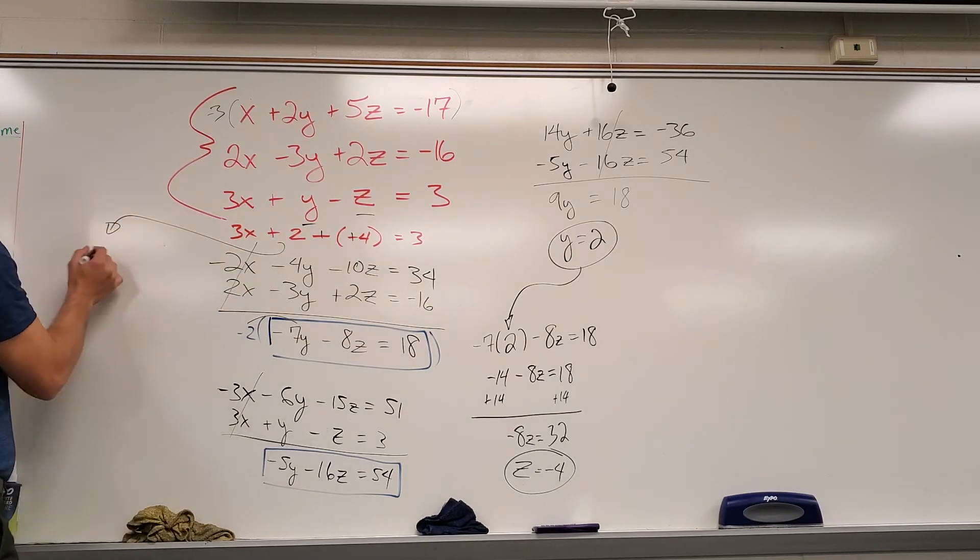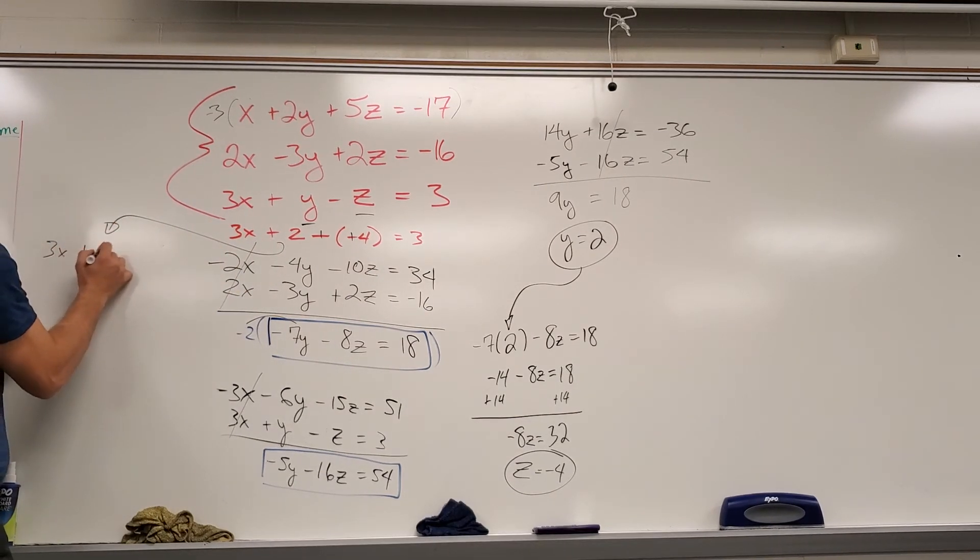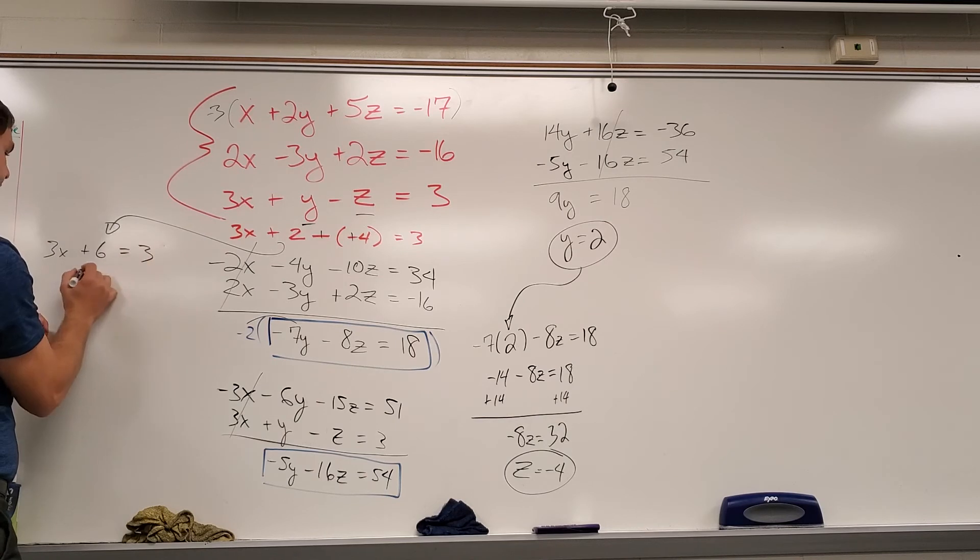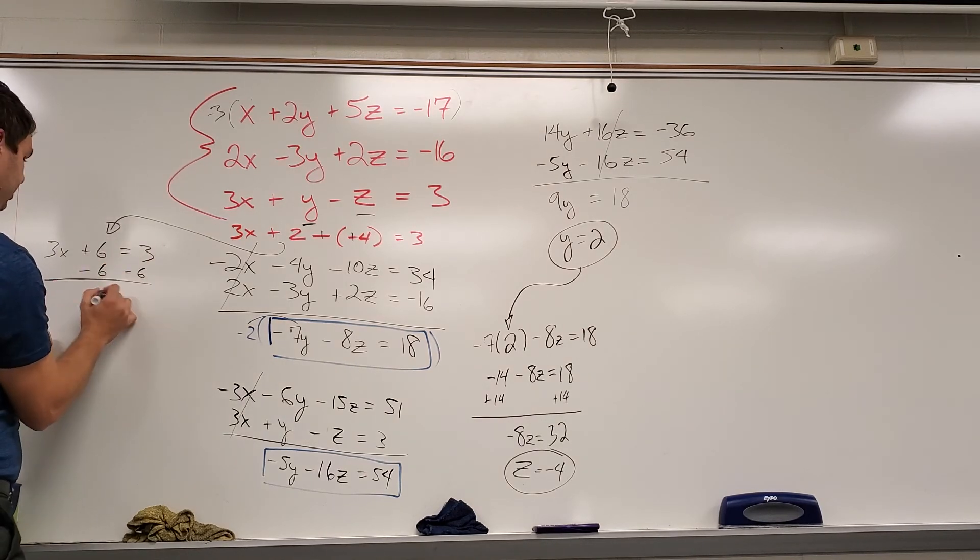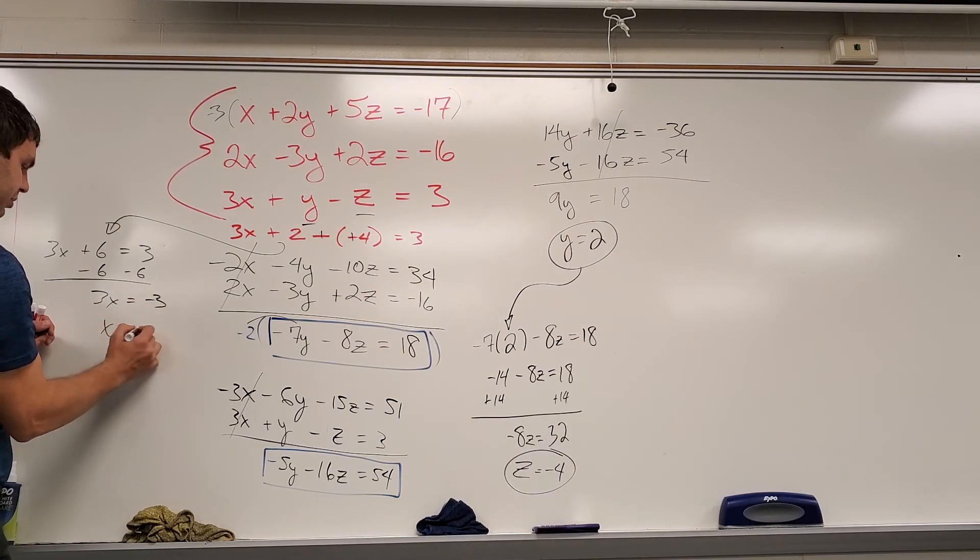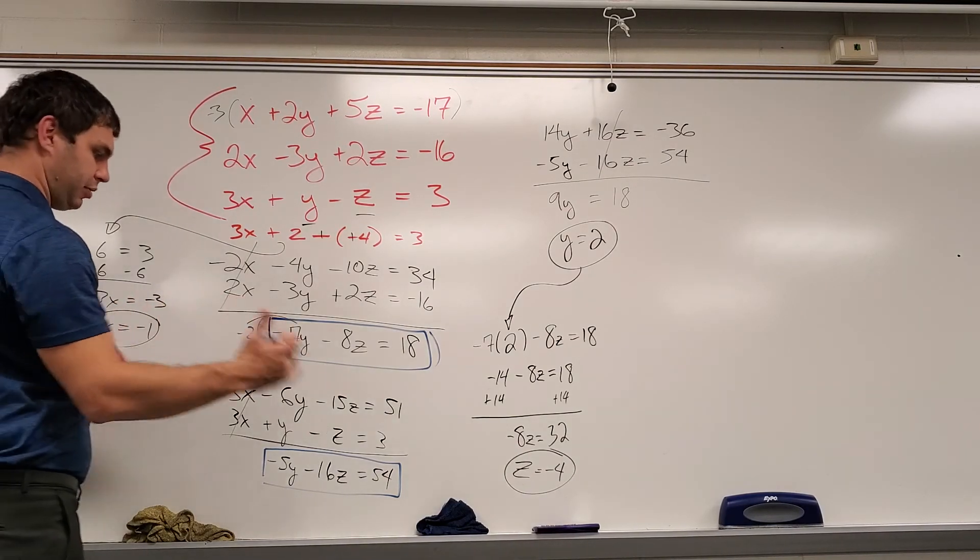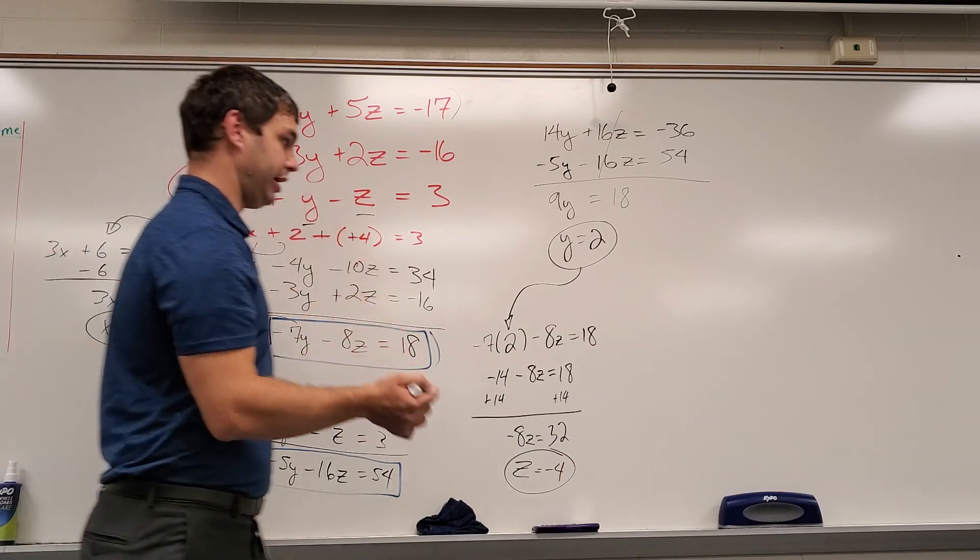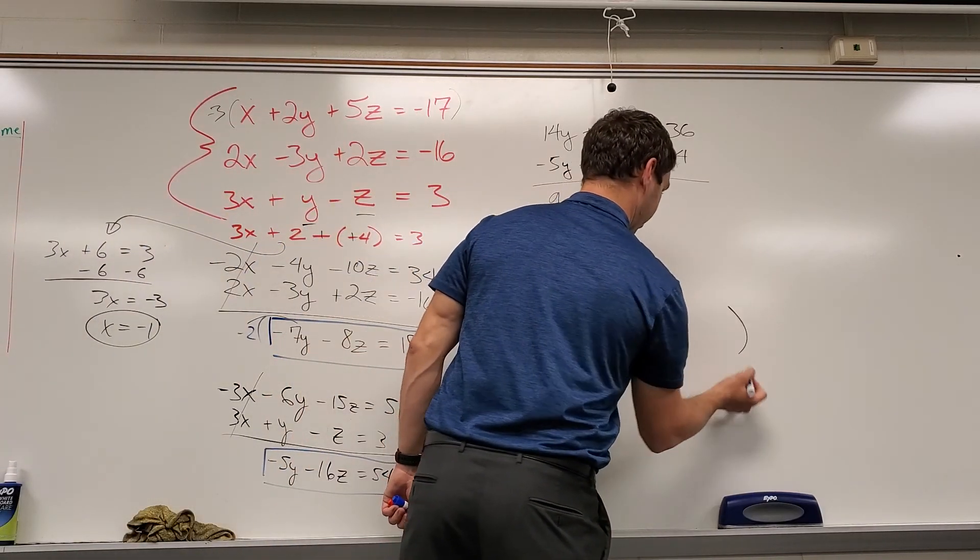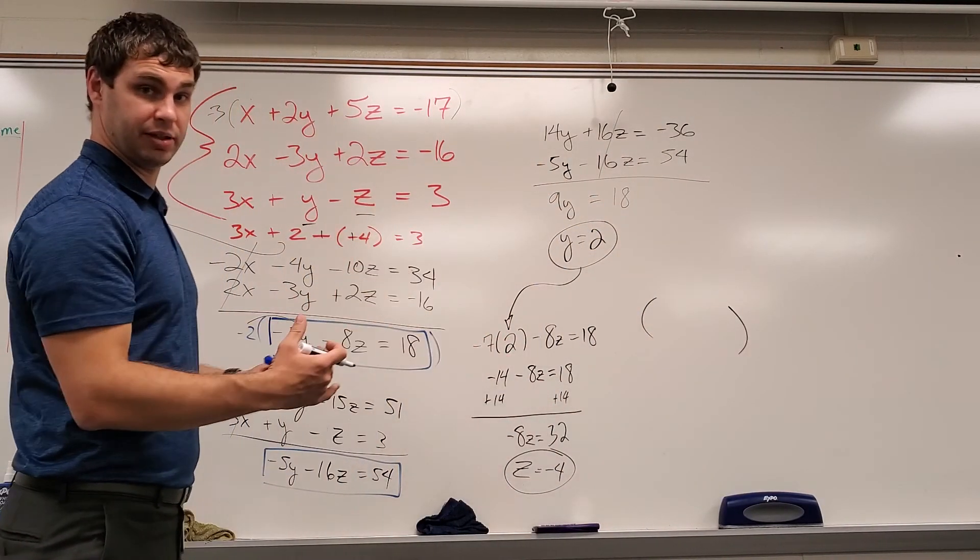So I should have come over here to begin with. So 3x plus 6 equals 3. Subtract 6 on both sides. 3x equals negative 3. So x would be negative 1. All right, so my x, y, and z all together, we're going to write this as a point in three dimensions.